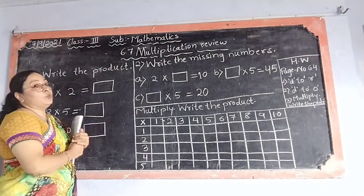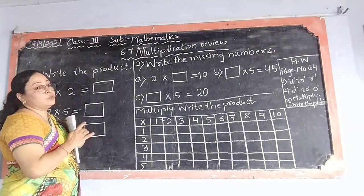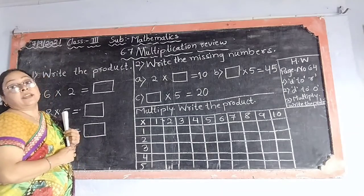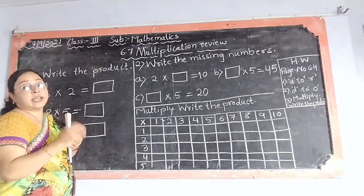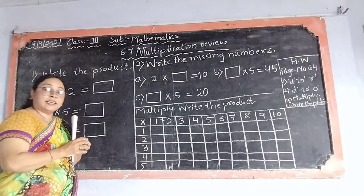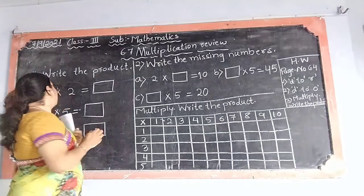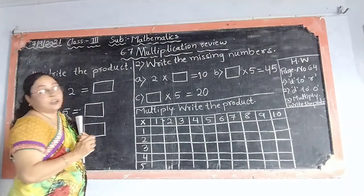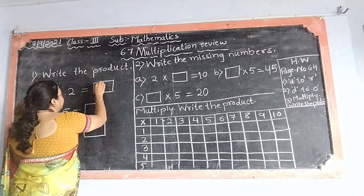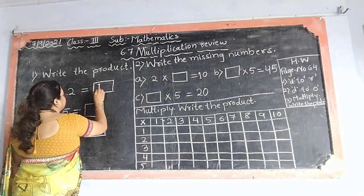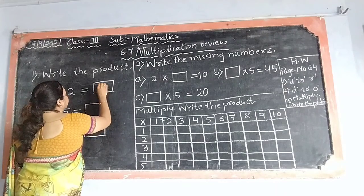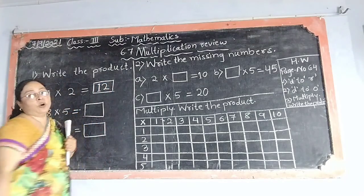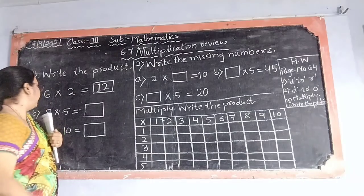How? See: 2 1's are 2, 2 2's are 4, 2 3's are 6, 2 4's are 8, 2 5's are 10, 2 6's are 12. The product is 12. What is the answer? 12. The product is 12. Understand? I hope you are understanding.